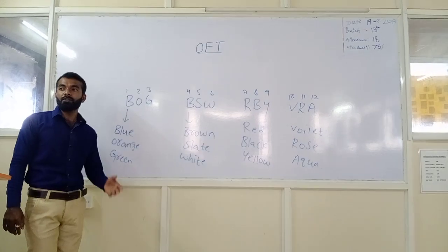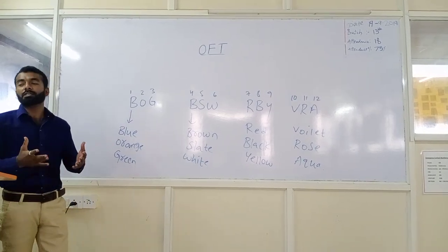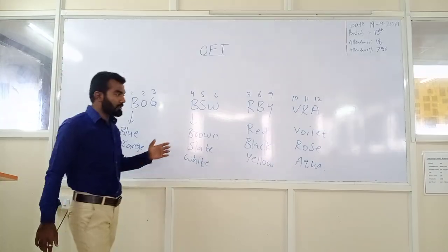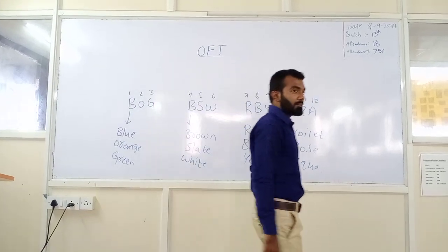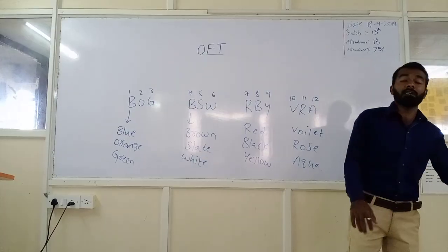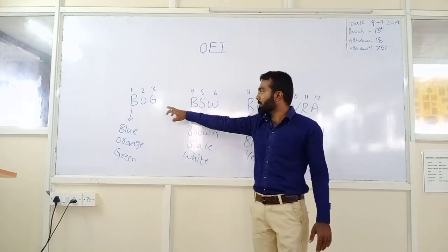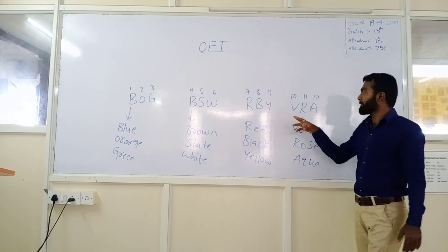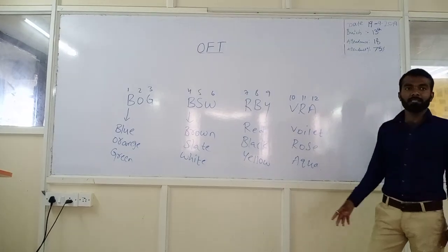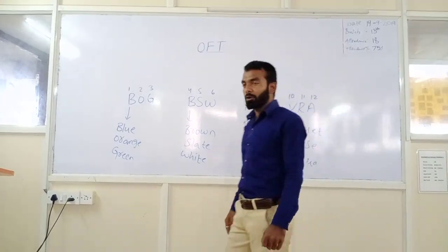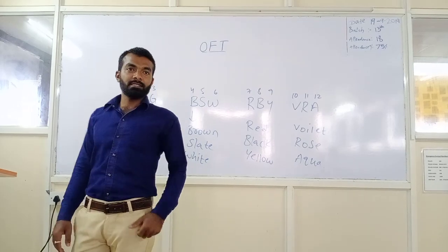So this is the way how you remember in an easy manner. Whenever any interviewer is asking you about color coding of optical fiber, you can answer them very easily without any hesitation. So how do you remember? You have to remember BOG BSDEVLO, RBY as well as VRA. This is a very simple trick. I hope you understand this trick.